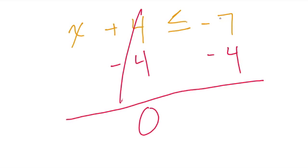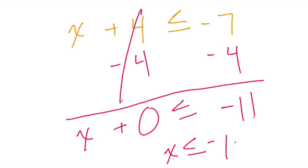and negative 7 minus 4 is negative 11. So now we have our x, we haven't touched that yet, plus 0 is less than or equal to negative 11. So I'll just rewrite this as x is less than or equal to negative 11.